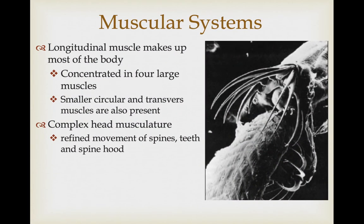They have longitudinal muscles that make up most of their muscular system, concentrated in four large bands that run the length of the body. Smaller circular and transverse muscles help them in their undulation motion while swimming. They have complex head musculature important for movement of the spines and teeth, and a muscular hood that can cover the spines when they're swimming and need greater hydrodynamic ability.